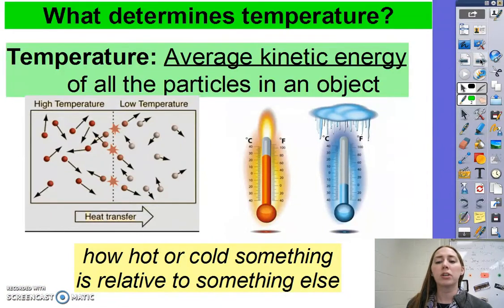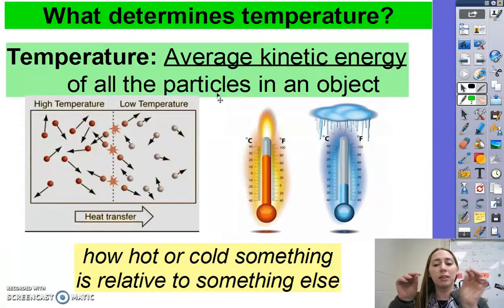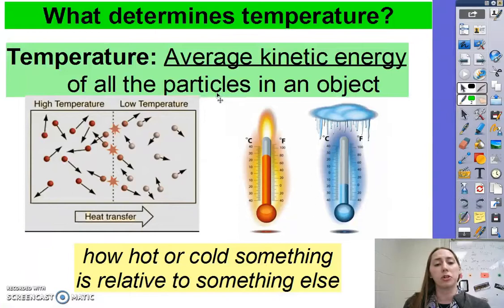So when we talk about temperature in science, we're talking about the average kinetic energy of all the particles in an object. Some particles might have more kinetic energy, and other particles might have a little bit less, but the average of them is what gives us their temperature.